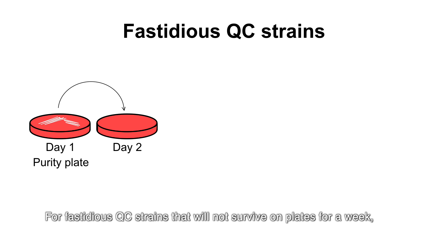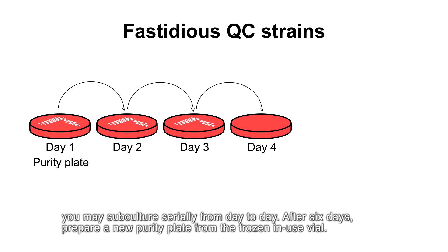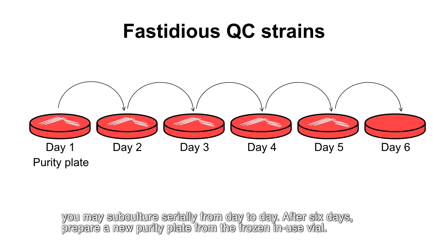For fastidious QC strains that will not survive on plates for a week, you may subculture serially from day to day. After six days, prepare a new purity plate from the frozen in-use vial.